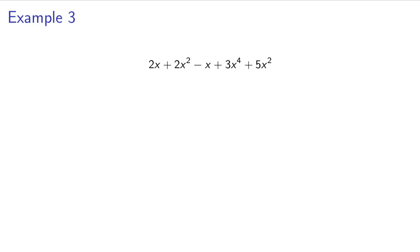So that is the most simplified form of the above expression. And this example doesn't come from anything, I just made it up just now. And I thought I'd go ahead and do one more example. So we have 2x plus 2x squared minus x plus 3x to the fourth plus 5x squared.